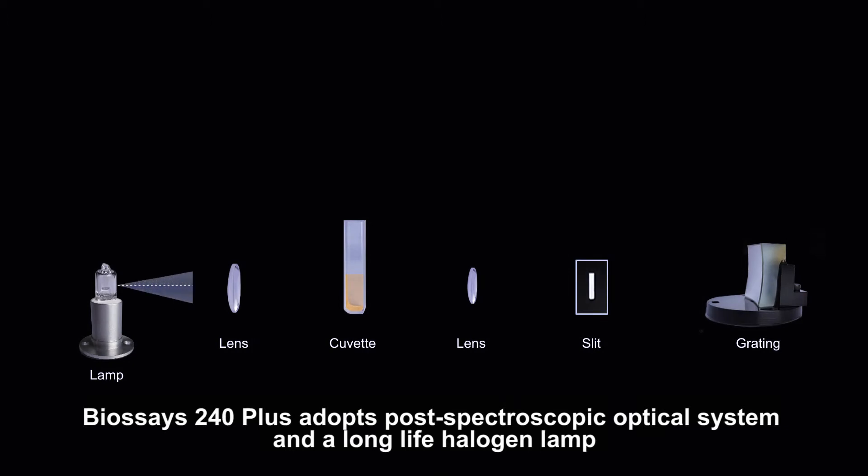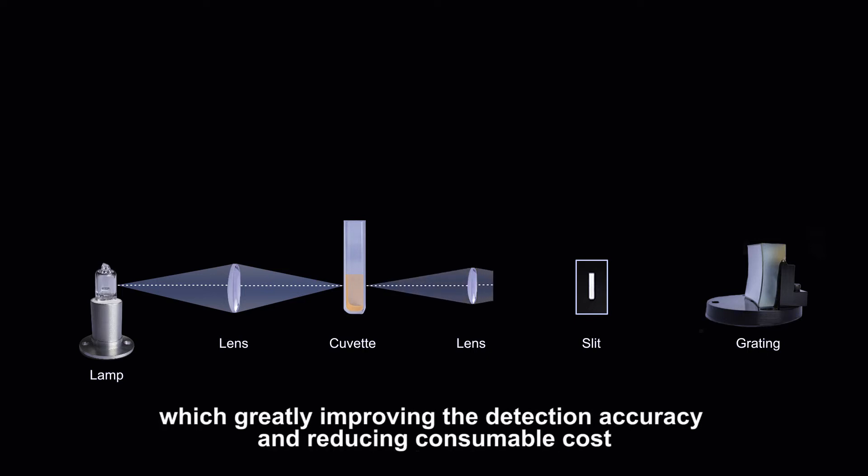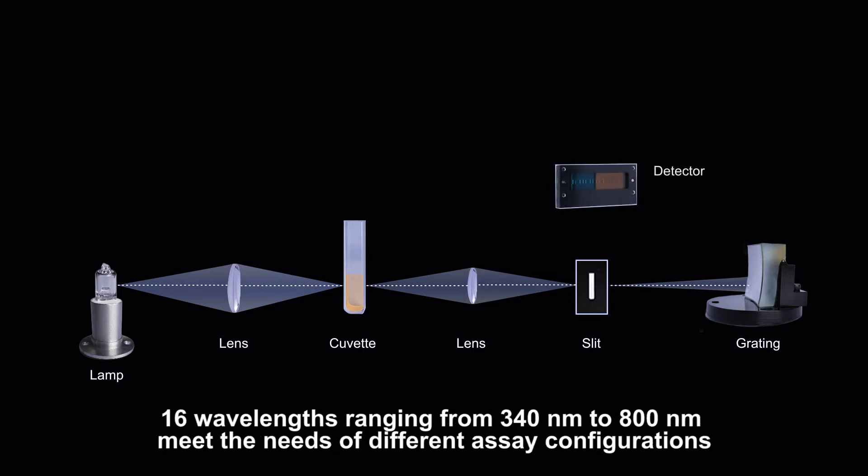BioSays 240 Plus adopts post-spectroscopic optical system and a long-life halogen lamp, which greatly improves the detection accuracy and reduces consumable cost. 16 wavelengths ranging from 340 nanometers to 800 nanometers meet the needs of different assay configurations.